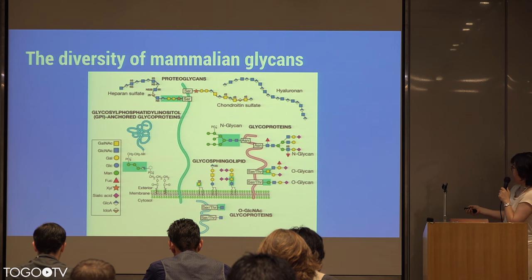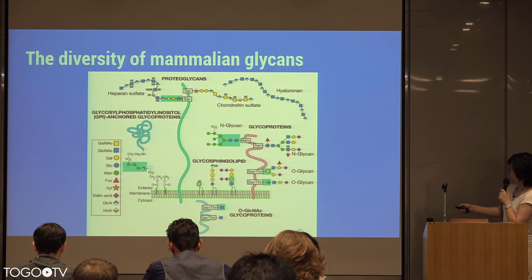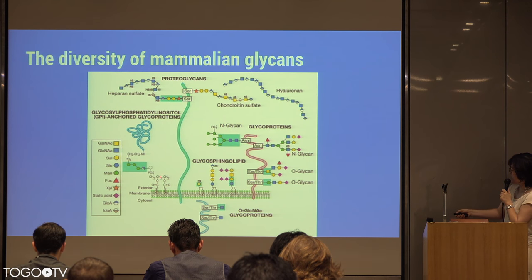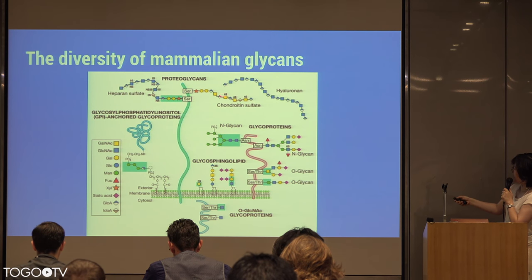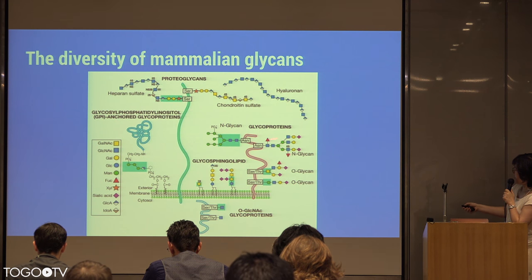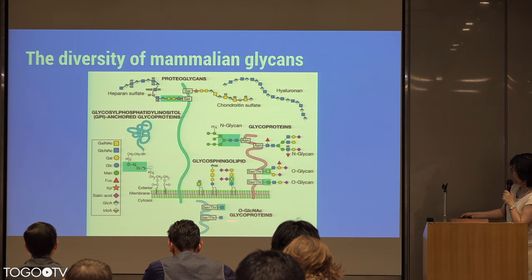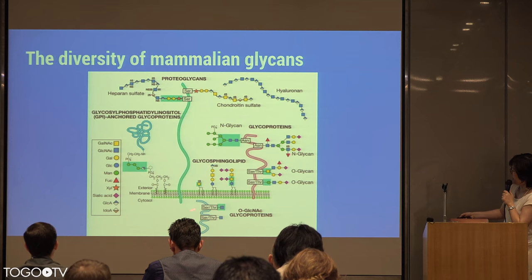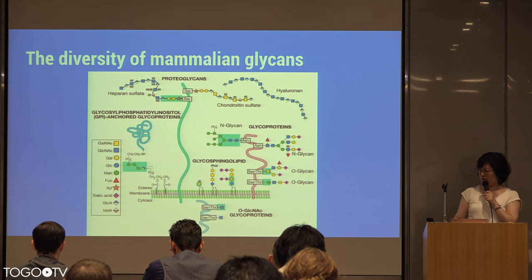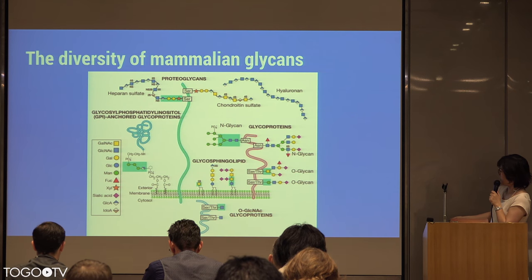The O-type antigen has three monosaccharides, whereas the B-type has an additional galactose, and the A-type has an additional N-acetylgalactosamine. The diversity of glycans is shown here — we have proteins and lipids that have different types of glycan structures on them. Heparan sulfates and chondroitin sulfates are long chains of monosaccharides on proteoglycans, whereas the more common ones are glycoproteins — N-glycans and O-glycans. O-GlcNAc modifications are interesting in that they occur in the cytoplasm and compete against phosphorylation, and they're shown to be quite important as well.